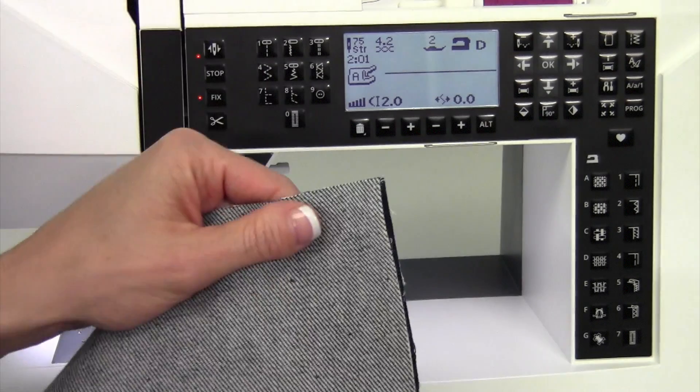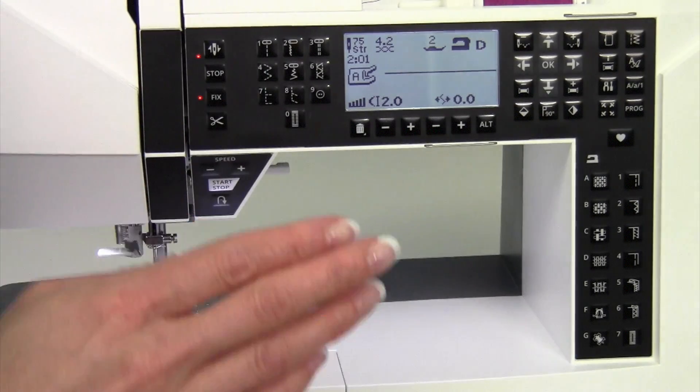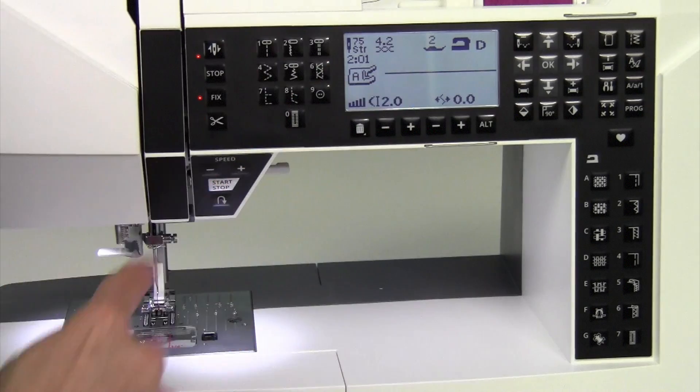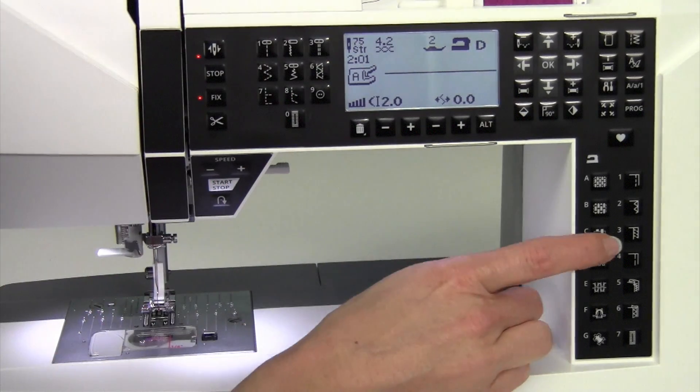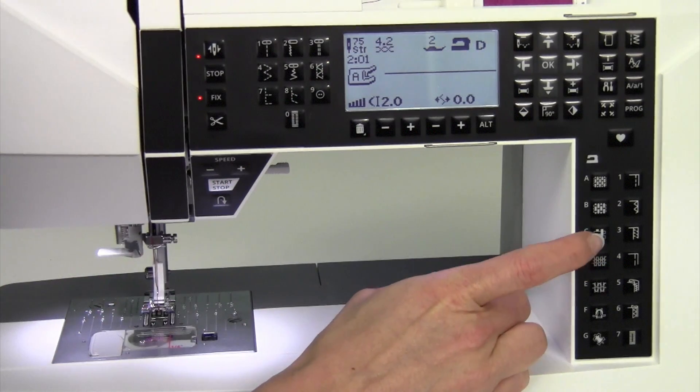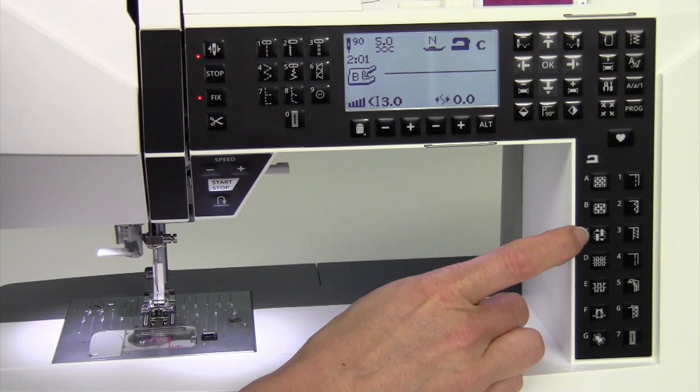Number one, if I am sewing denims, this is a little thicker, I would want to put a denim needle in, but I'm going to skip that for just a second. But I am going to use the sewing advisor, and we're going to pick Fabric C, that's the heavy woven, and then our seam.